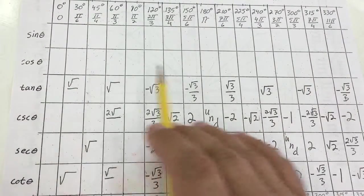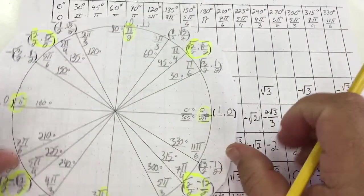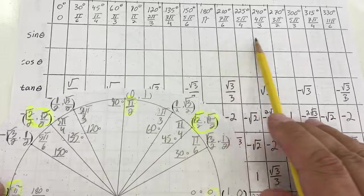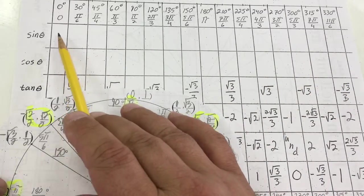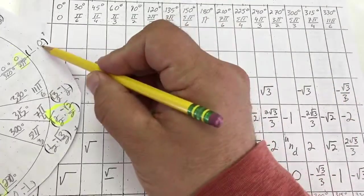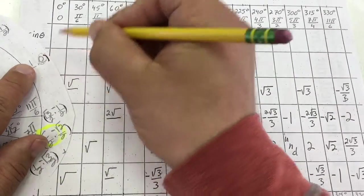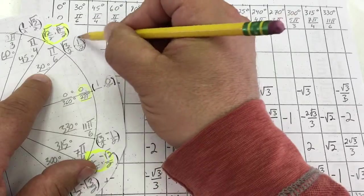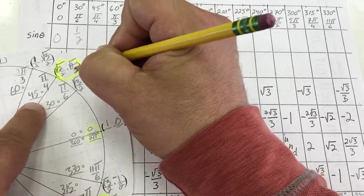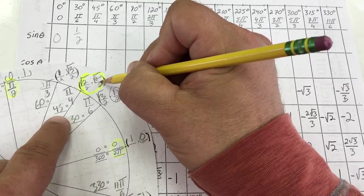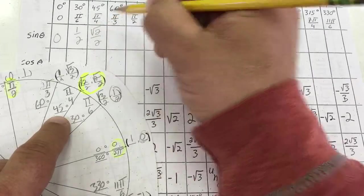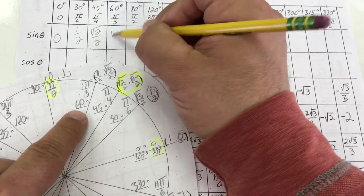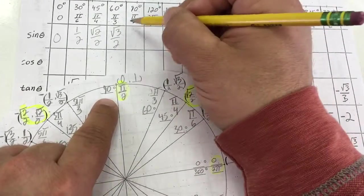I'm going to fill in this big trig table. One of the best ways to do it is have the unit circle available. If I have the unit circle, I can get all of these sine values all the way across pretty rapidly. All the sine values — the sine at 0 is the y value. The y value at 0 is 0. The y value at 30 degrees is 1/2. The y value at 45 degrees is root 2 over 2. The y value at 60 degrees is root 3 over 2. The y value at 90 degrees is 1.